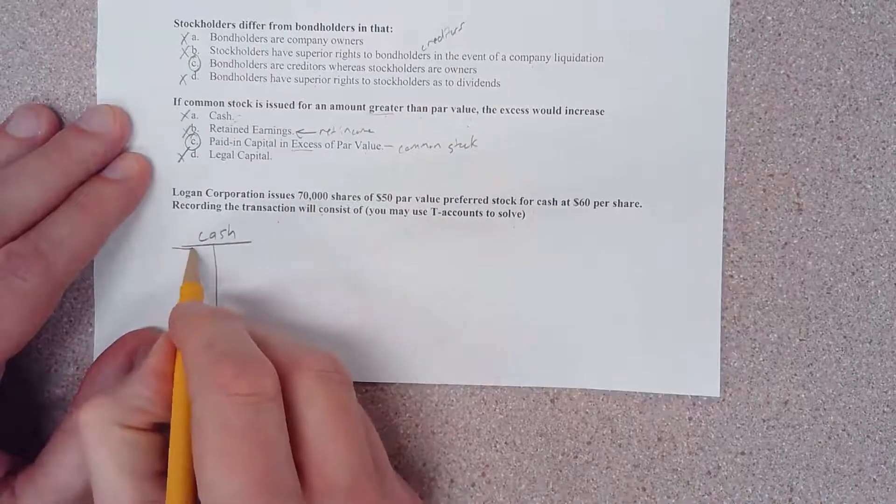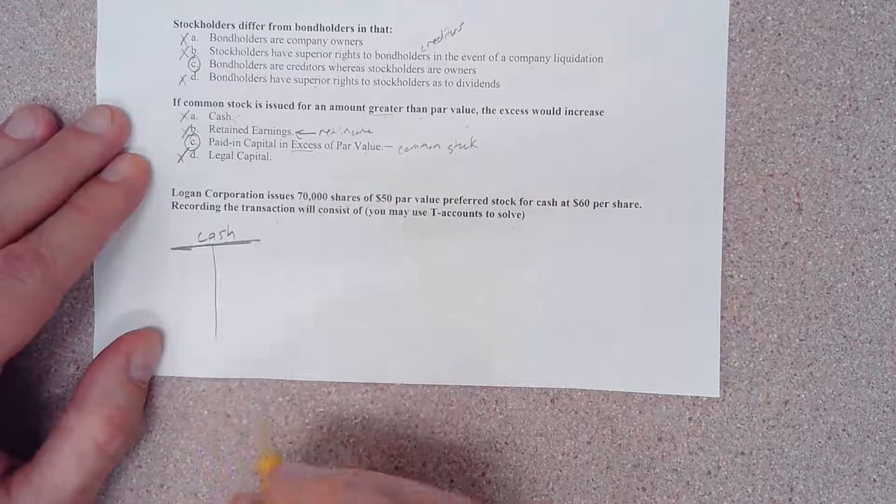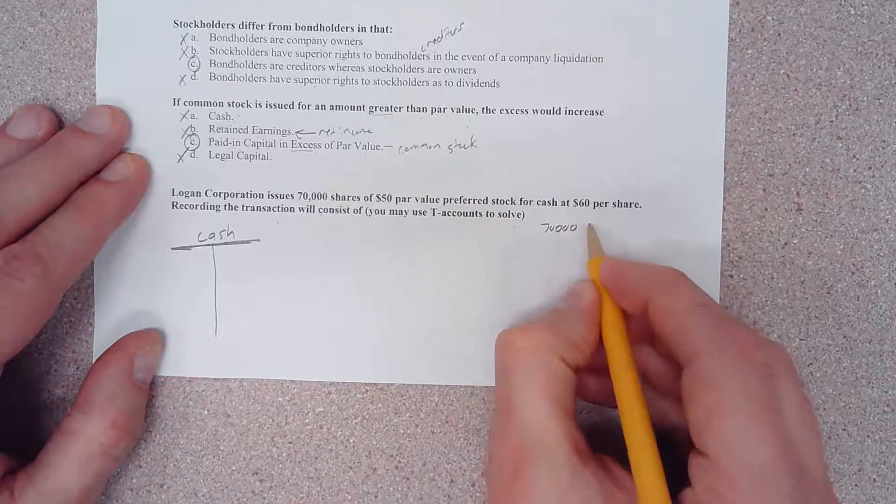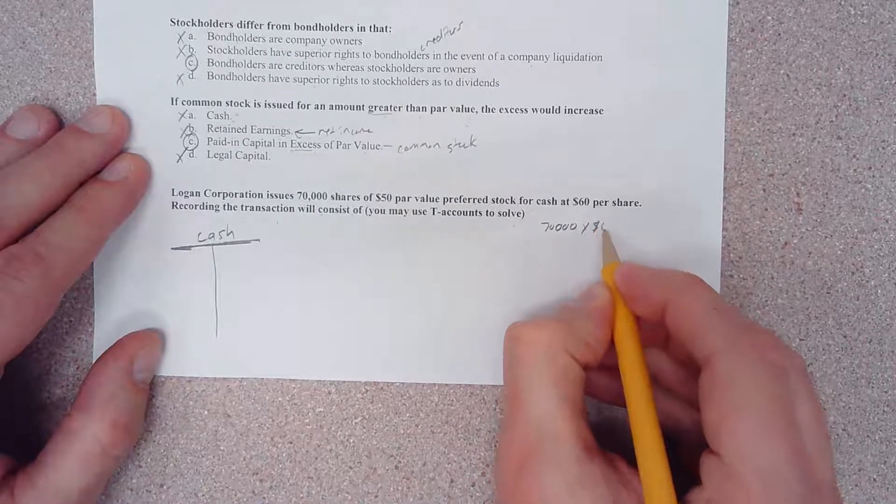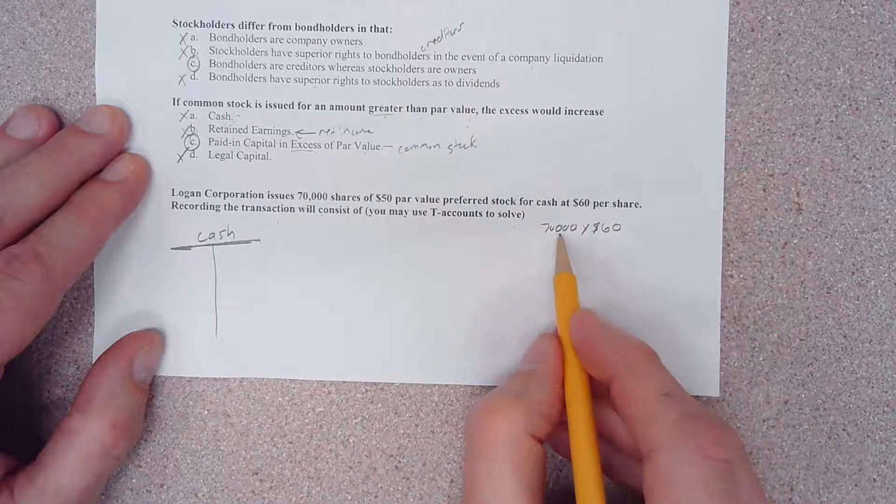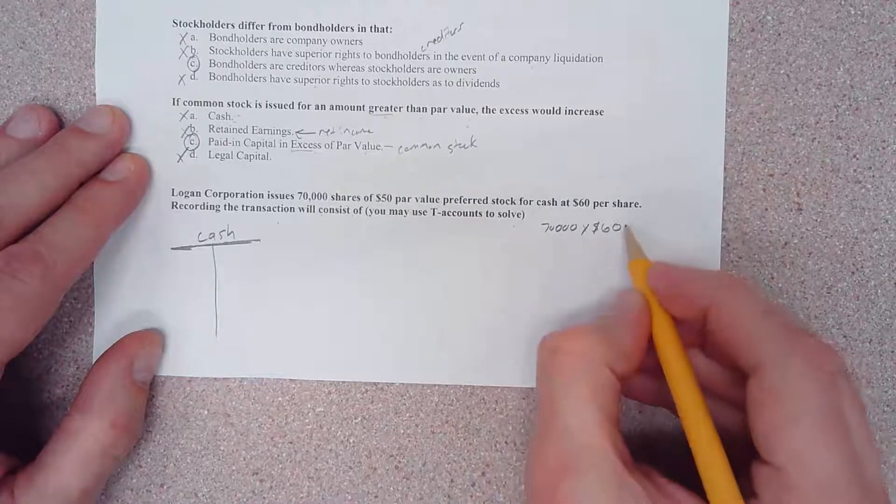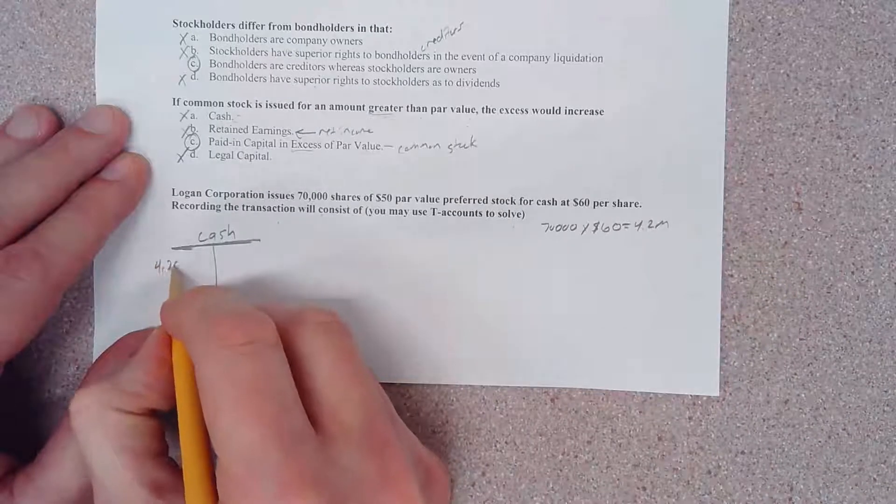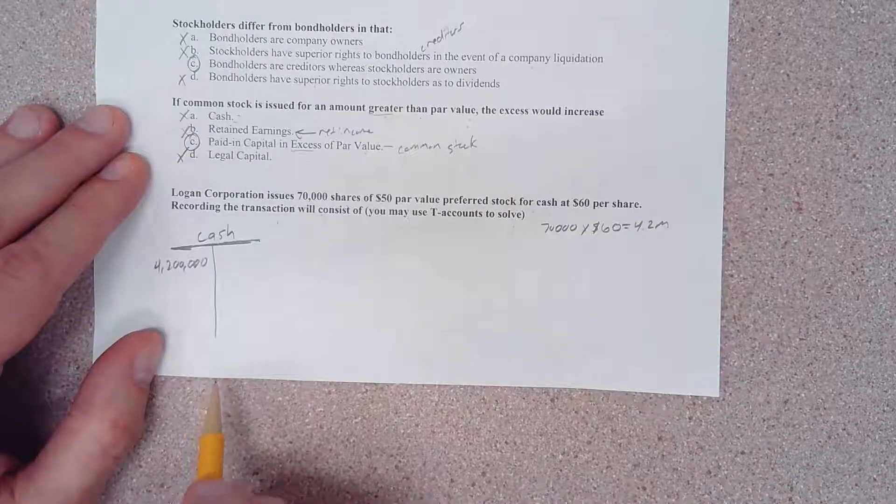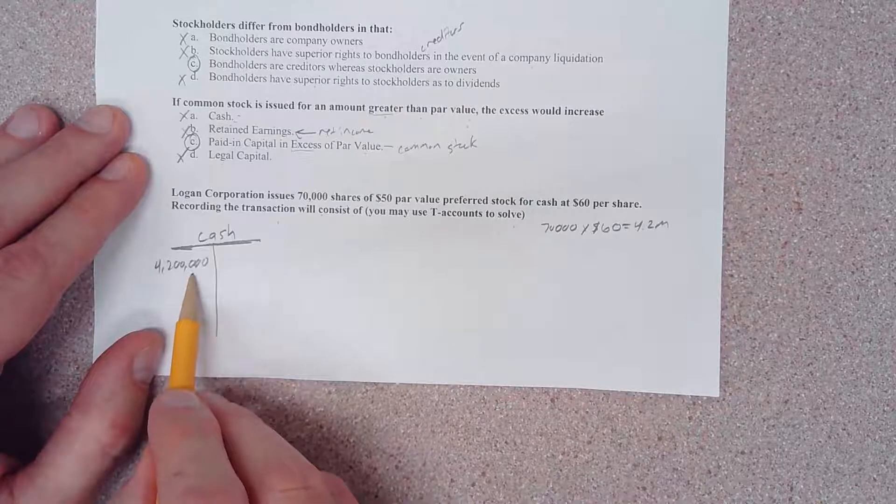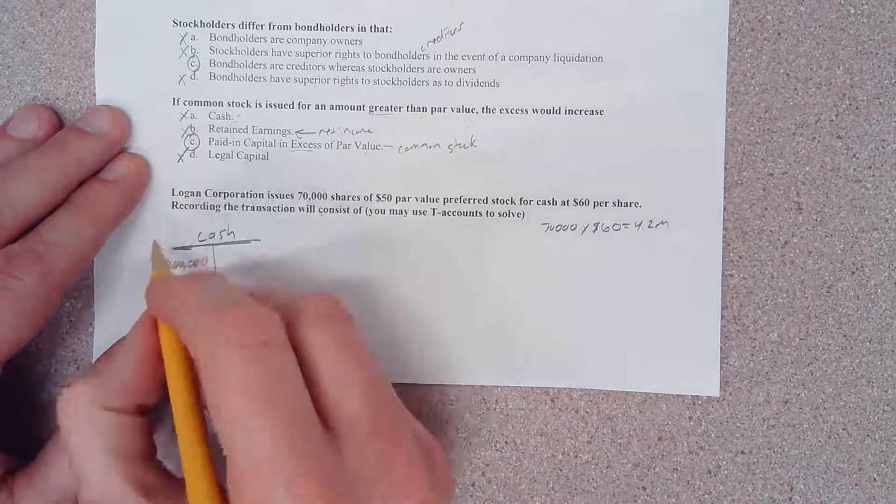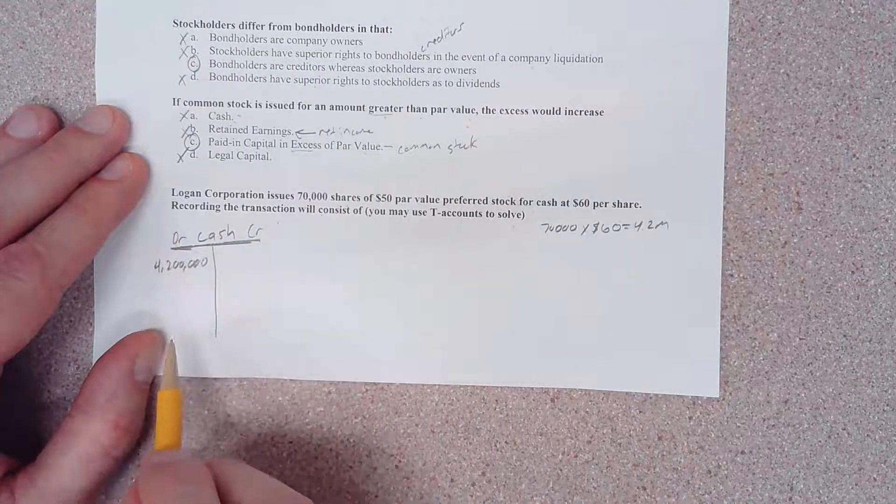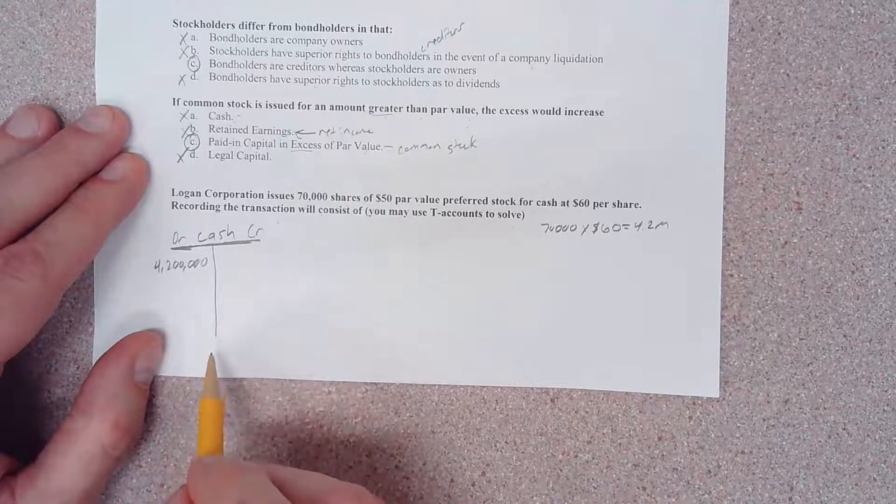The first one that is impacted is cash, so let's make a T-account for cash. What we're going to do is take 70,000 shares times $60, and if we execute that out, we're going to come up with $4.2 million. I'm going to record that over on the left side because cash is an asset, and assets go up with a debit.